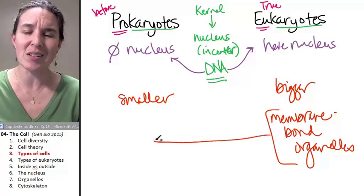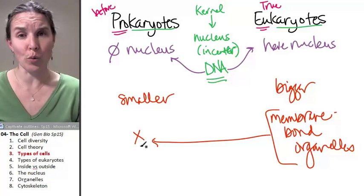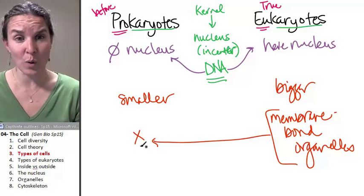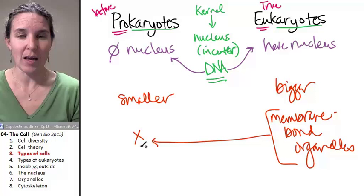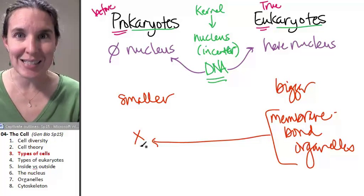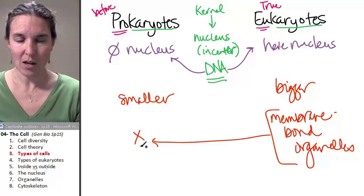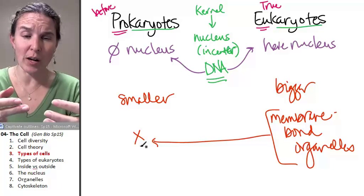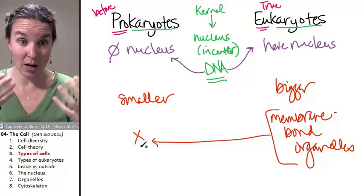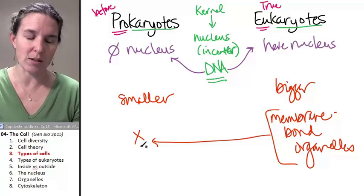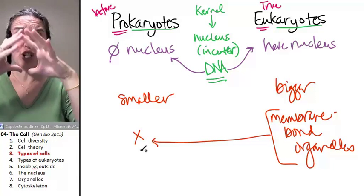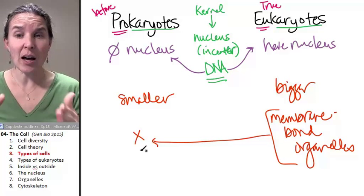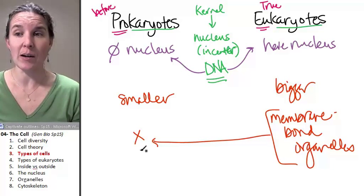Whereas in prokaryotes, dude, there's not enough room to have cells with their own membrane-bound organelles inside of them. A prokaryote is the size of an organelle. So if you had a whole organelle inside the prokaryote, it is just a giant organelle, which some may argue that that's actually the case.